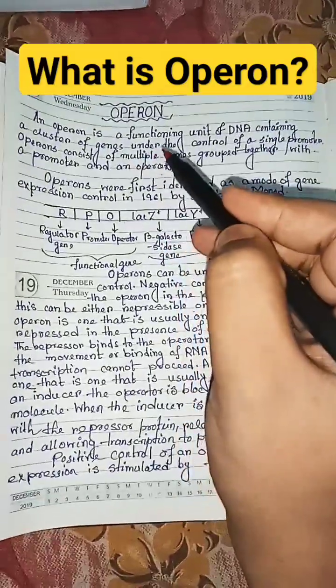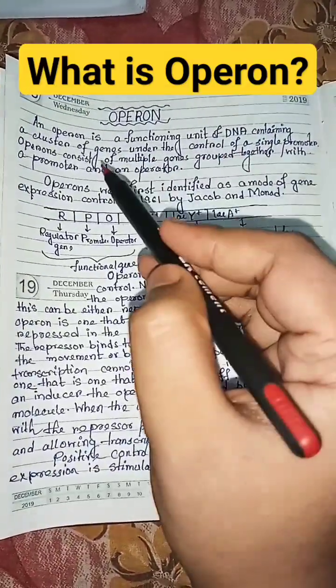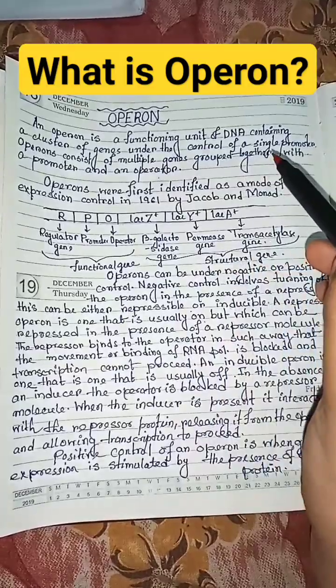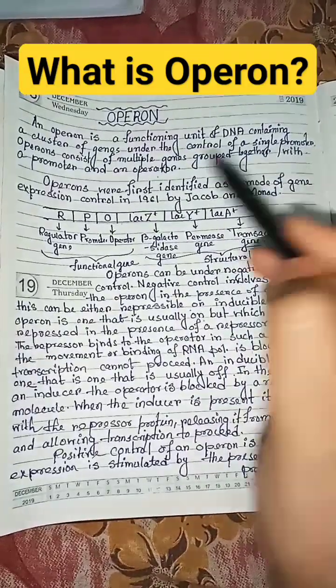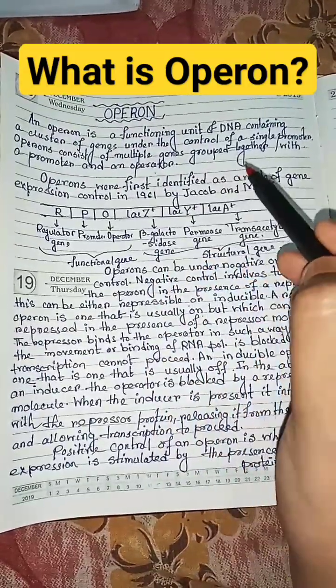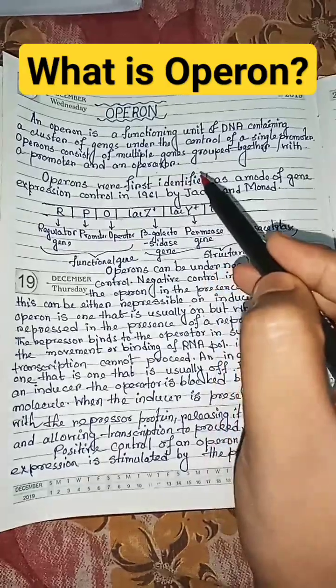An operon is a functioning unit of DNA containing a cluster of genes under the control of a single promoter. Operons consist of multiple genes grouped together with a promoter and an operator.